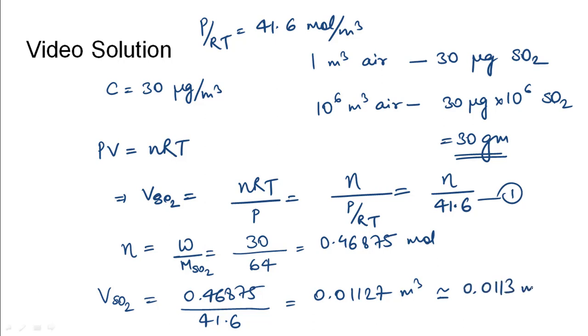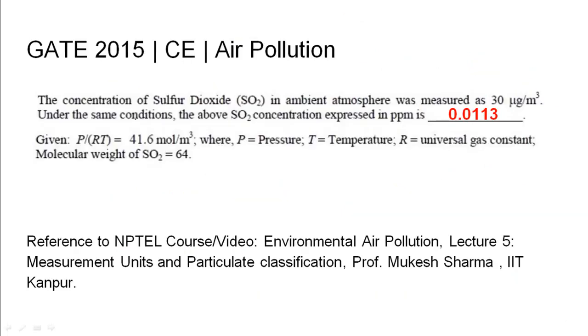So this much meter cube of sulfur dioxide is present in 1 million meter cube of air, which can also be written as 0.0113 parts per million. So the concentration of sulfur dioxide expressed in PPM is 0.0113.